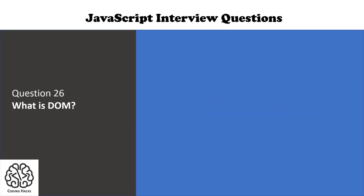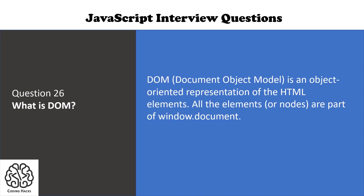The next question is: what is DOM? DOM stands for Document Object Model. It is an object-oriented representation of the HTML. All the elements or nodes are part of window.document. We can inspect using F12 in any browser such as Chrome to see the DOM of the complete web page.